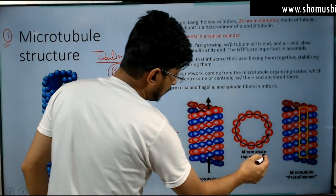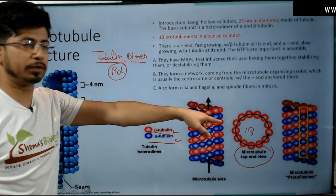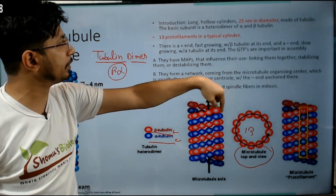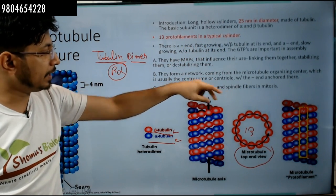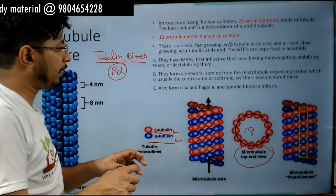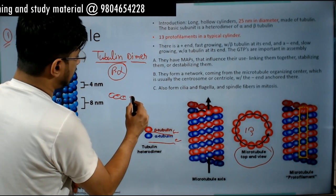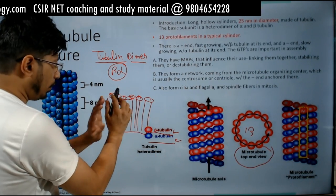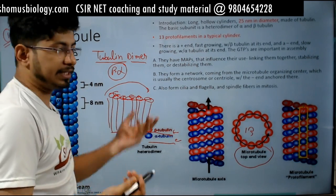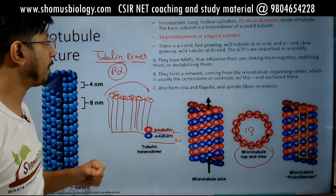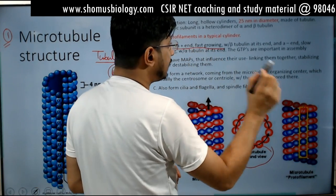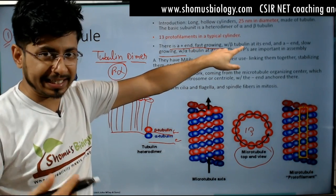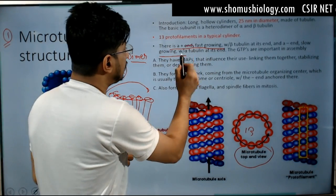Thirteen different tubulin proteins together form what is called thirteen protofilaments in a typical cylinder. The diameter is twenty-three nanometers. The thirteen protofilaments first arrange themselves like a sheet structure, and then they fold the sheet to form a cylinder — a hollow cylinder. There is a plus end which is the fast growing end, and there is a minus end which is the slow growing end. The plus end has beta tubulin at its tip, and the minus end has alpha tubulin at its tip.